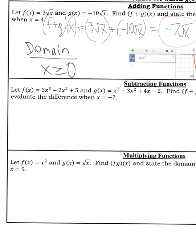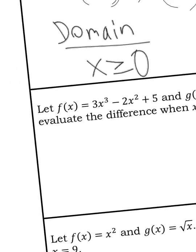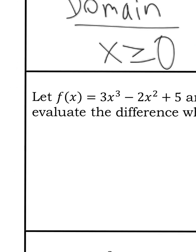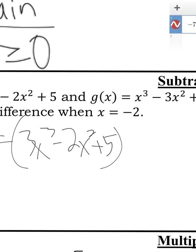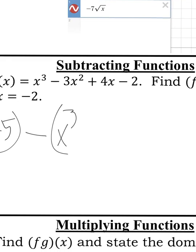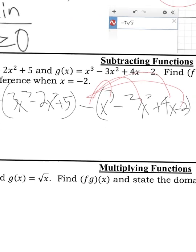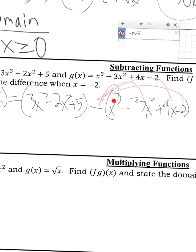For this next example, I'm going to subtract g from f. I'll write f minus g of x. That's the notation for subtraction of two functions. I have 3x to the third, I'll put it all in parenthesis, minus 2x squared plus 5. And then, this is why you need to put it in parenthesis, because you're minusing this whole function. So I'm minusing x to the third minus 3x squared plus 4x minus 2. Don't forget to distribute that negative to everything. What is 3x to the third minus x to the third?